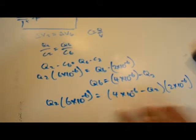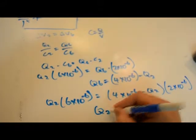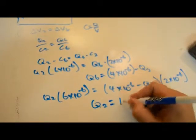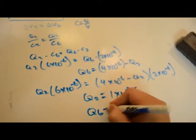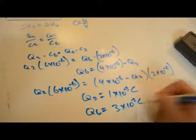After plugging everything in, we can solve for Q2 and Q6. Q2 equals 1 times 10 to the negative 3rd coulombs, and Q6 equals 3 times 10 to the negative 3rd coulombs.